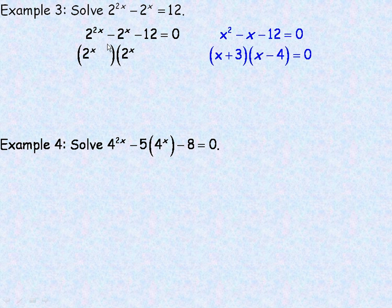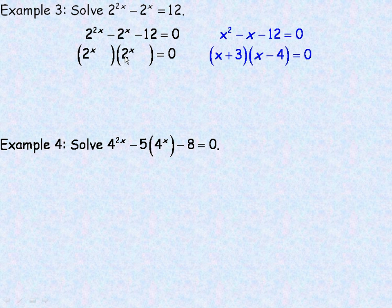We're going to factor the exponential version the same way, but instead of x times x giving x squared, in order to get 2 to the 2x you need 2 to the x times 2 to the x — because when you multiply things with the same base, you add the exponents. So x plus x gives 2x, and 2 to the x times 2 to the x equals 2 to the 2x.